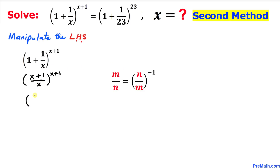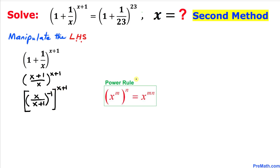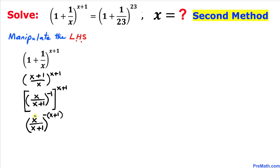Now we flip the fraction using the reciprocal rule, writing it as (x/(x+1))^(−1), and we still have the exponent x + 1. Applying the power rule, we multiply the nested exponents: (x/(x+1))^(−1 × (x+1)) = (x/(x+1))^(−(x+1)). Now let's focus on the fraction x/(x+1).